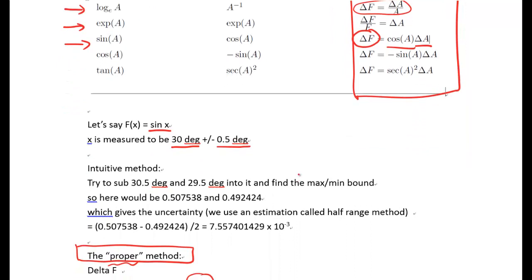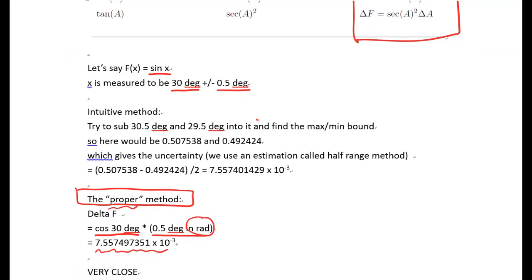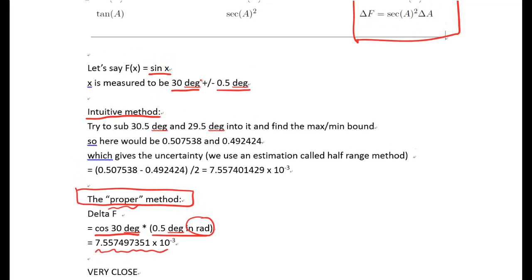If you are not mathematically strong or you don't want to spend too much time to deal with this, there's another alternative I would say is also acceptable in IB physics, and I call this an intuitive method. The intuitive method is really intuitive. What you do is think about that sine x is what you want to find at the end, and when you do the measurement, x is ± 0.5 deg. So that is to say x could be in the worst case 30.5 deg or 29.5 deg. Since you know sine function is a monotonic function, at least within 90 degrees, you can simply substitute these two values to find the maximum and minimum bound.